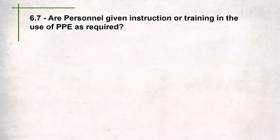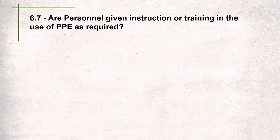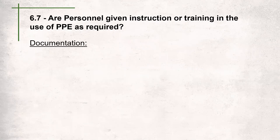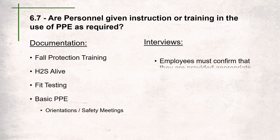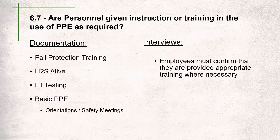Question 6.7 asks: are personnel given instruction or training in the use of PPE as required? This is a documentation and interview question. Auditors will review training records and compare them to the tasks being performed by workers to ensure training is provided where necessary. They'll look for fall protection training, H2S Alive, fit testing, and basic PPE training — which can be included in orientations or safety meetings. Auditors will also ask employees to confirm that appropriate training is provided.